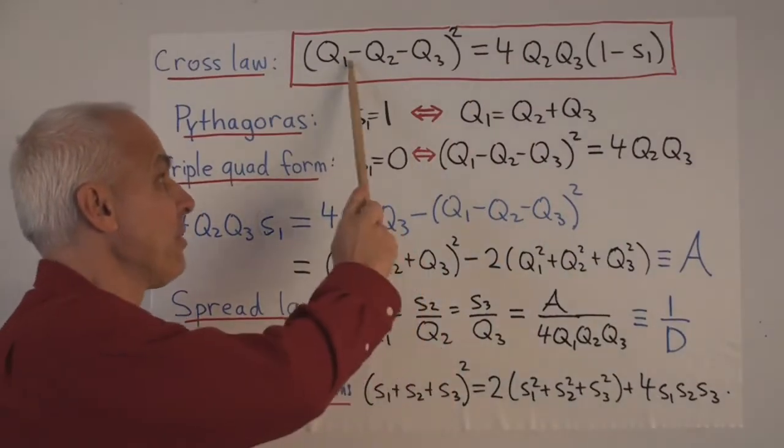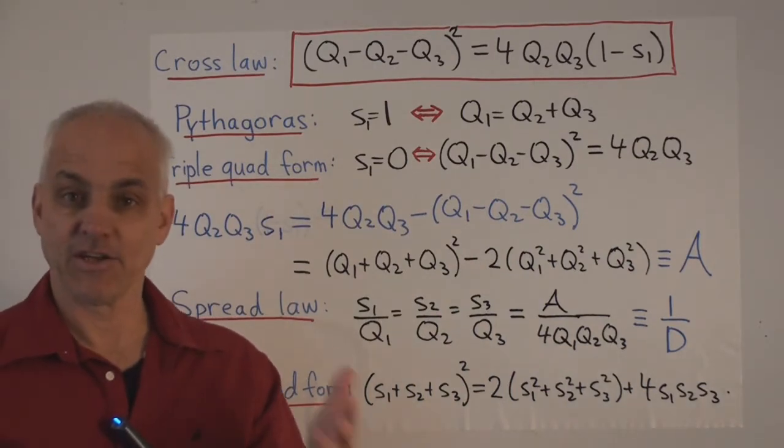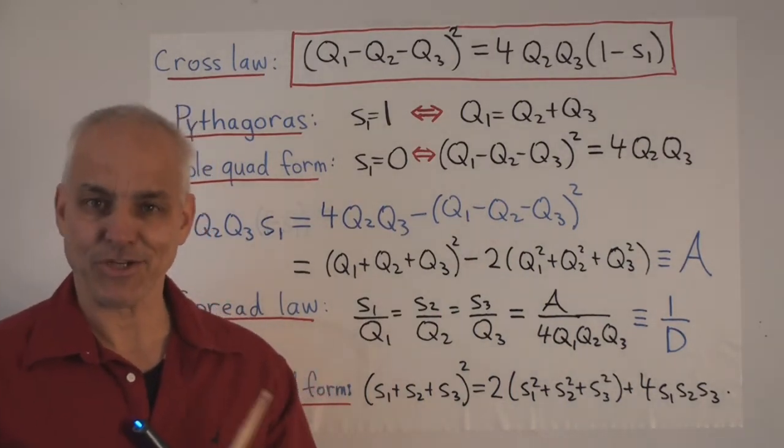So we've just established our cross law. Now let's derive the other four main laws of rational trigonometry.